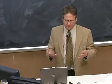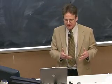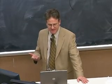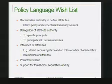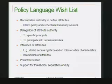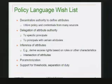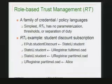We want to support the inference of attributes from one or more other attributes, like when we derive access rights based on roles or other characteristics. We'd also like to support parameterization, so that an age attribute could have a numeric field specifying what the age value is. We'd like to support thresholds, which is basically a kind of voting, and separation of duties, which is a technique that can be used to make fraud more difficult to commit.